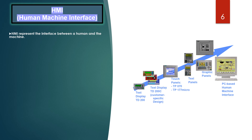HMI can also be used for output messages. When a critical process state occurs, an alarm is automatically triggered — for example, when a predefined limit is exceeded, the alarm is displayed on the HMI. HMI can also be used for archiving process values and alarms, allowing you to document the process progress and later have access to older production data.